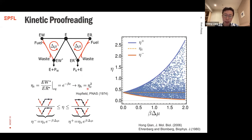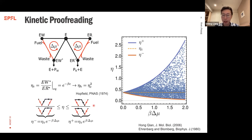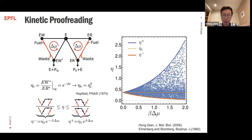Even so, the error rate remains finite because of kinetic constraints in the proofreading network — there are symmetries in the kinetics. If we relax all kinetic constraints, we can find the thermodynamic bound on the error rate. Using our reaction pathway approach, we obtain a lower bound on the error rate — found when the driving force pushes the wrong state toward the right state — and an upper bound, corresponding to energy being used in the wrong way, pushing the right state toward the wrong state.